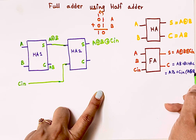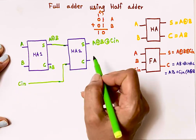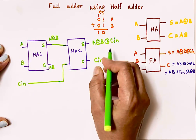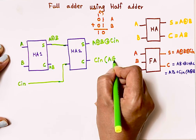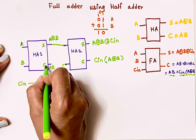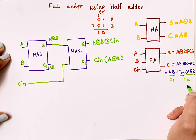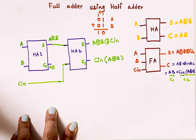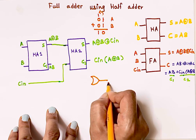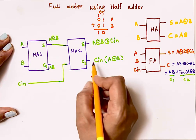For the carry, we need AB + C-in·(A XOR B). The first half adder gives carry C1 = A·B, and the second half adder gives carry C2 = C-in·(A XOR B). Since the final carry is C1 plus C2, and plus means OR, I simply use an OR gate. The OR gate takes C1 and C2 as inputs, and its output is the final carry output.